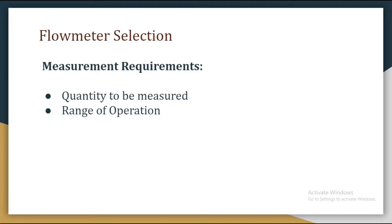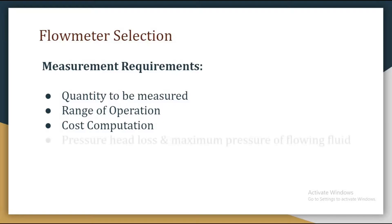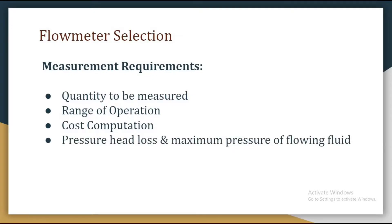The next thing is range of operation. For a wide range of operation, electromagnetic or ultrasonic flow meters are suitable. We have to be familiar with the range of operation. We also need to be familiar with cost computation — if we want to reduce the cost of a flow meter, we will have to adjust with low and consistent uncertainty in measurement.